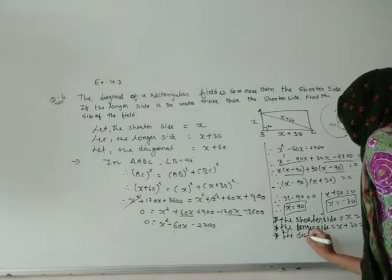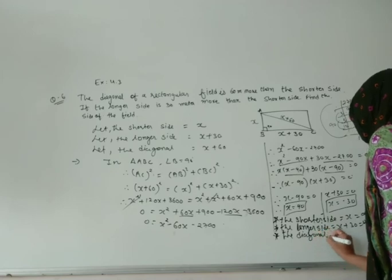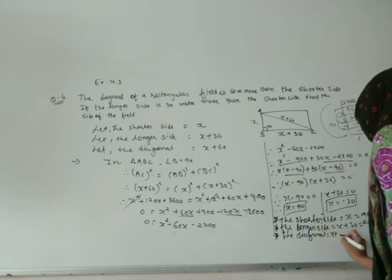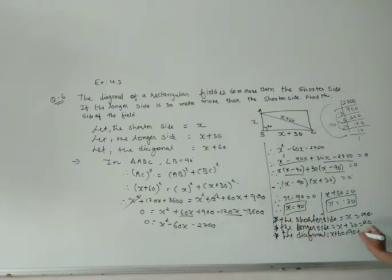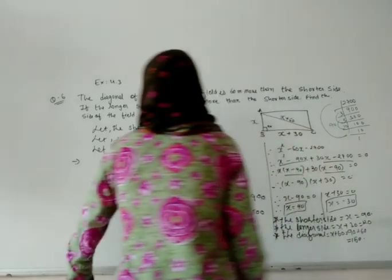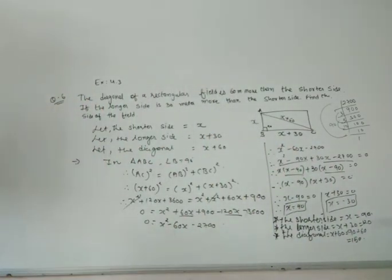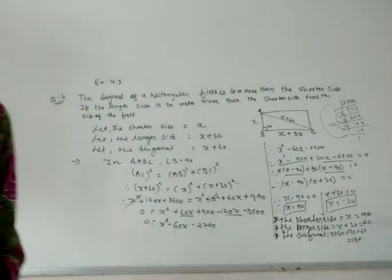The diagonal will be x plus 60. So x we got as 90, plus 60, we are getting 90 plus 60 as 150. Here this is the end of this question. I hope you understood the overview of this question.